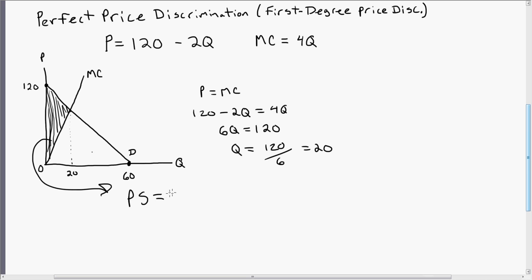So producer surplus. The area of this triangle is going to be one-half base times height. So 120 minus 0 is just 120. 20 minus 0 is just 20. And so we're going to get $1,200.